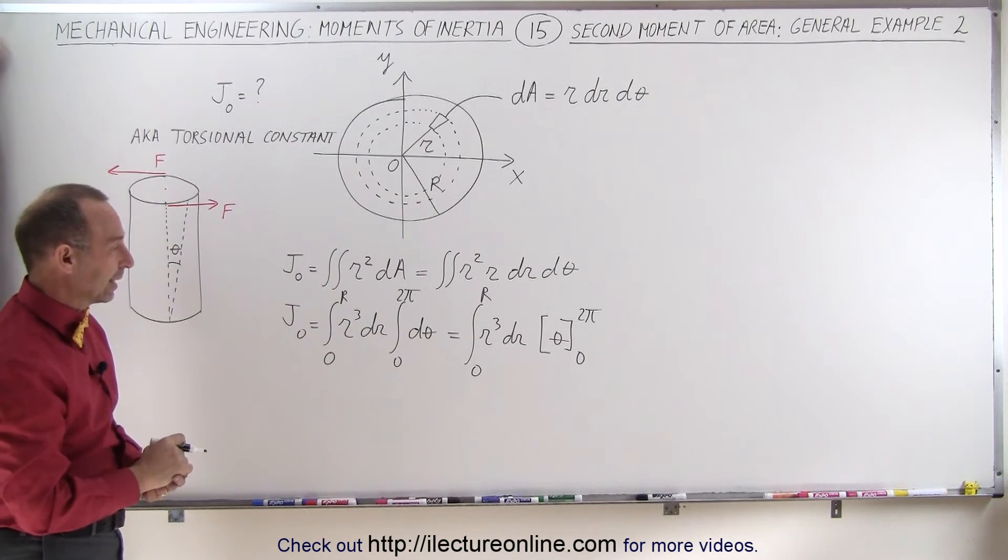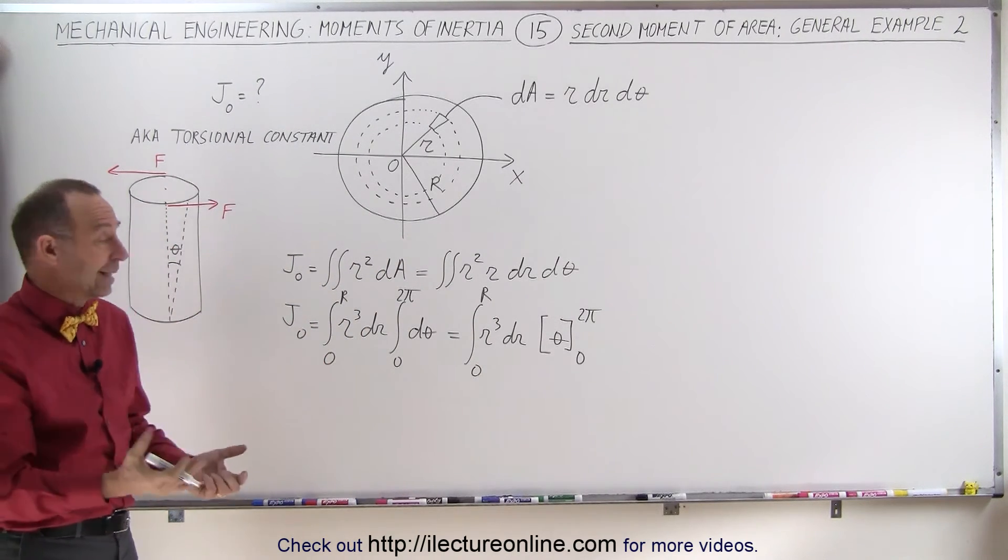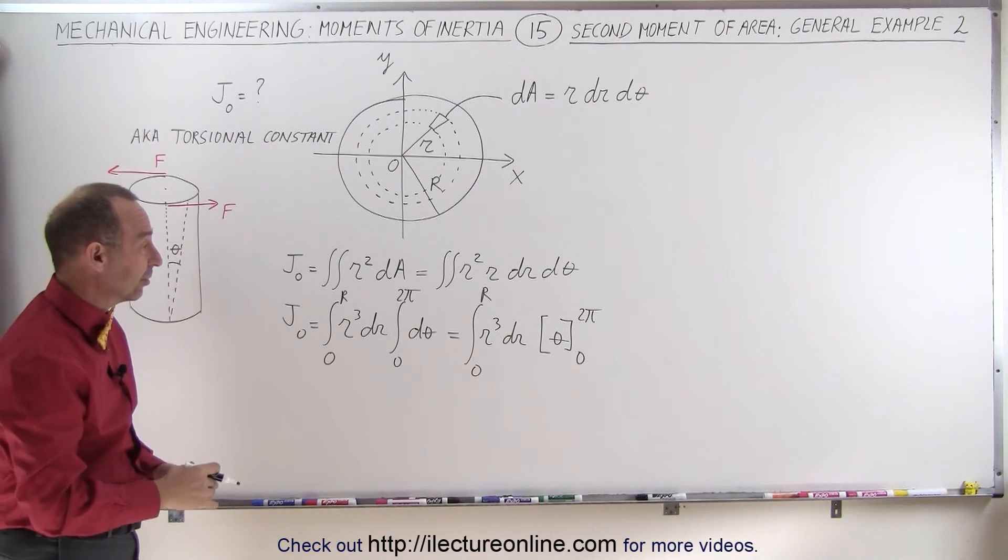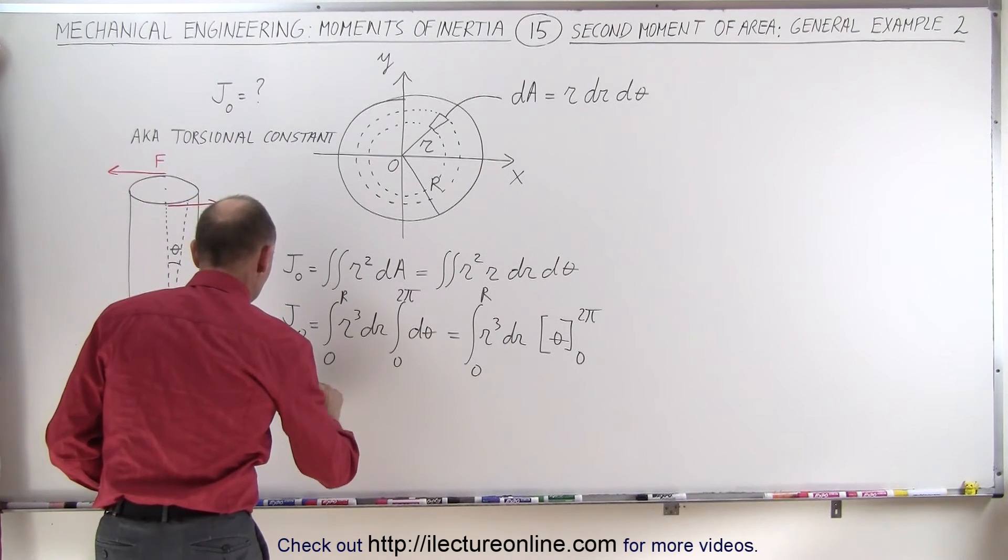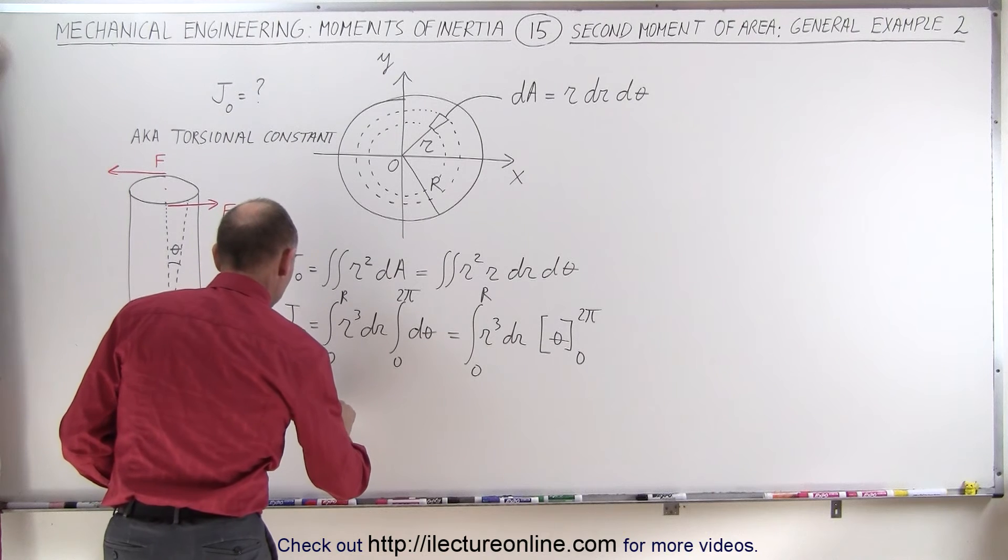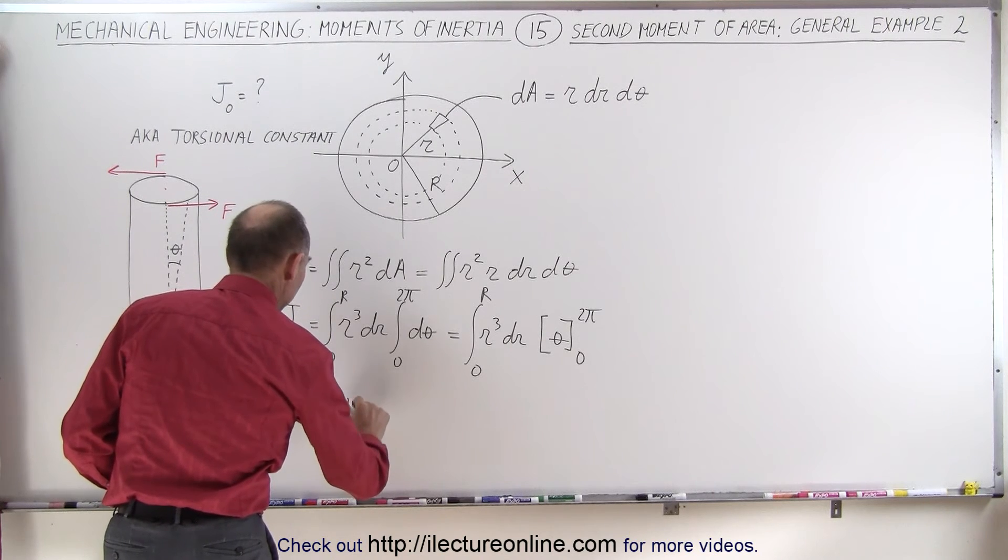Of course, when you plug in the limits, when you plug in zero, you get nothing. When you plug in two pi, that's a constant, so this can now be written as the second moment of area is equal to two pi times